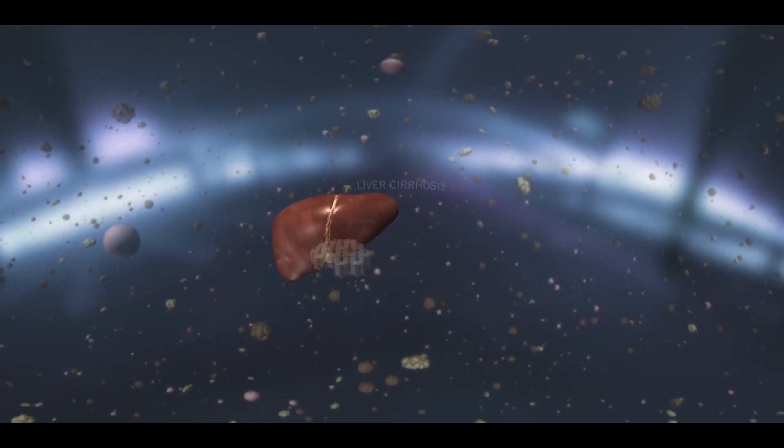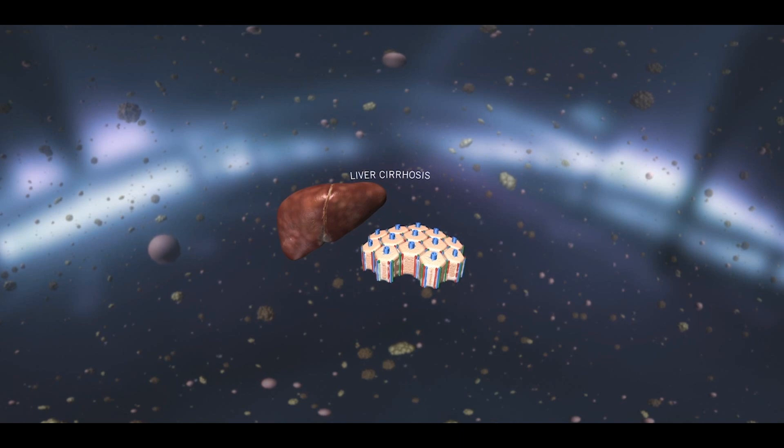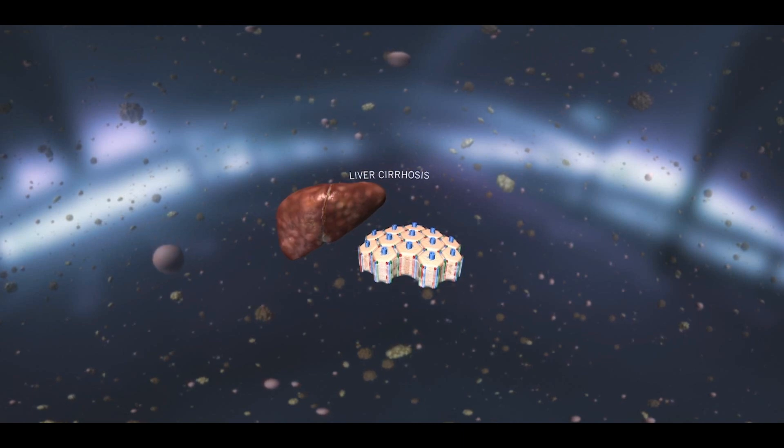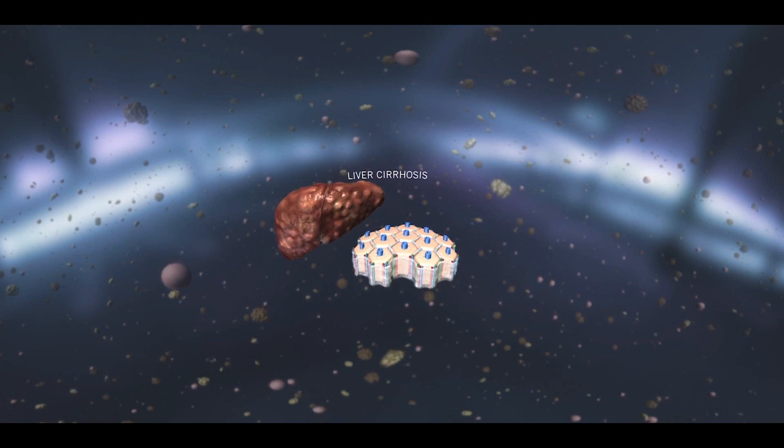Hepatocellular carcinoma, HCC, primarily arises in a cirrhotic liver, where chronic injury leads to repeated inflammation, fibrogenesis, and disordered liver architecture.